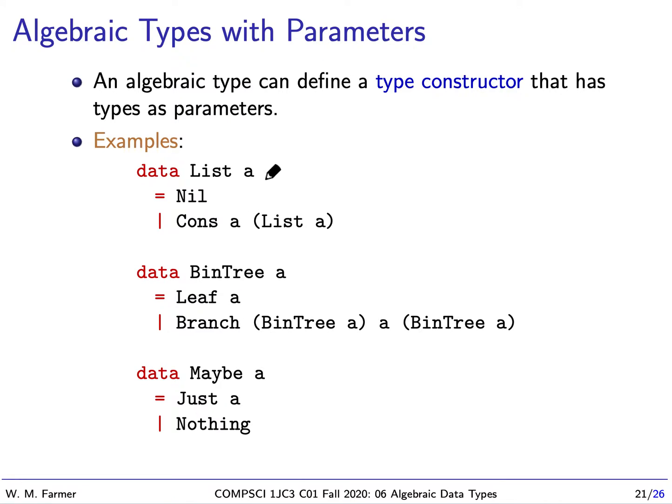For instance, we had an algebraic data type for lists of integers, but it's even more useful if we have a parametrized list type. So here, a could be any type. We have nil and cons as before. Instead of integer, we have a and list of a. And now, this algebraic data type defines the type for all values of lists of that value.